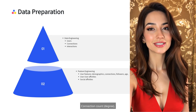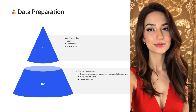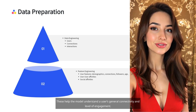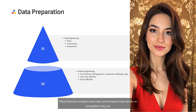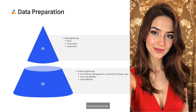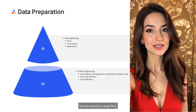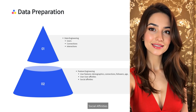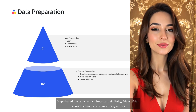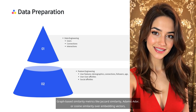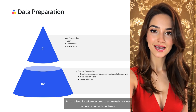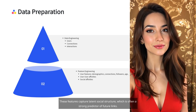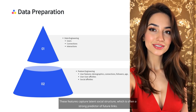User features: we compute standalone features per user — demographics like age and location, connection count (degree), number of followers and followings, and account age or activity frequency. These help the model understand a user's general connectivity and level of engagement. User-user affinities compare two users and measure how similar or compatible they are: common friends, shared interests or page likes, mutual groups or events. We also compute higher-order social affinity features from the social graph — graph-based similarity metrics like Jaccard similarity, Adamic-Adar, or cosine similarity over embedding vectors, personalized PageRank scores to estimate how close two users are in the network, and community detection outputs to identify users within the same cluster. These features capture latent social structure, which is often a strong predictor of future links.